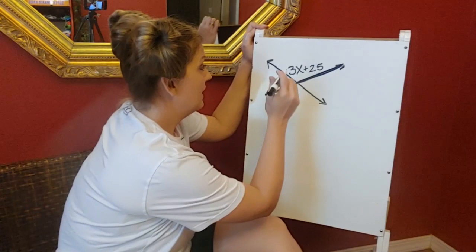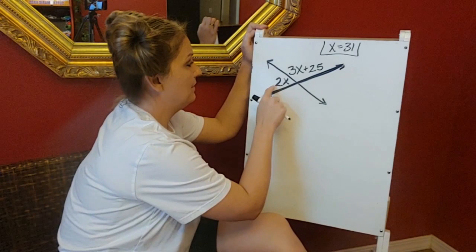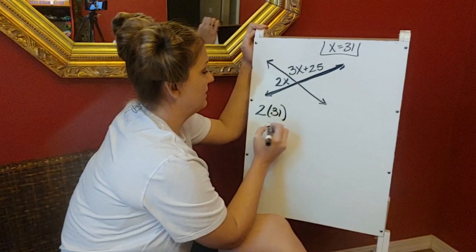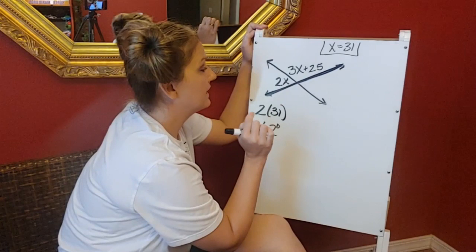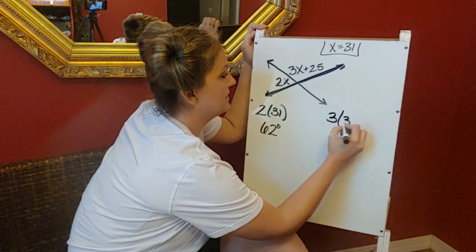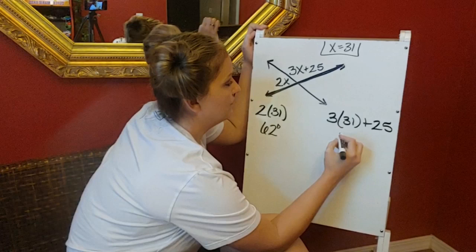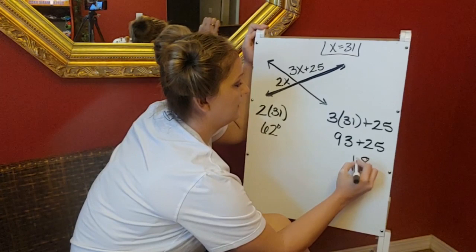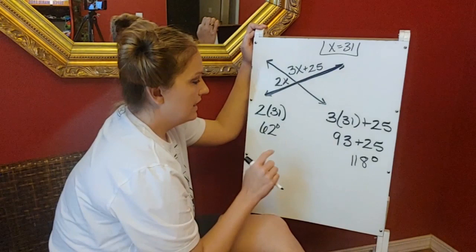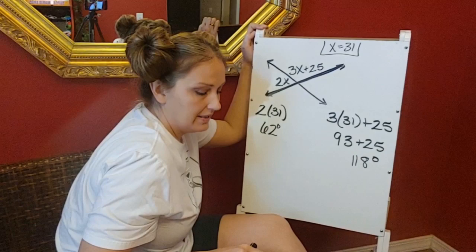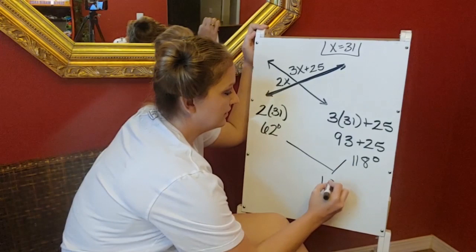I know that x is 31. Put that right up there. I'm going to substitute in my first angle. So 2 times 31 is 62. So this angle right here is 62 degrees. Now I'm going to take this angle, this 3x plus 25, and I'm going to substitute in 31 for it. 3 times 31 is 93, plus 25, 118. So this angle is 118 degrees. So to check your work, I'm going to take this 62 plus this 118. 62 plus 118, they add together to give me 180 degrees, which is exactly what we thought would happen. May the force be with you.